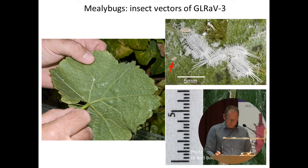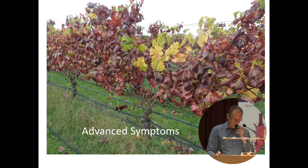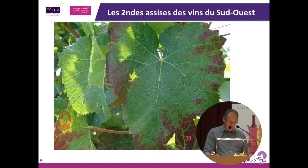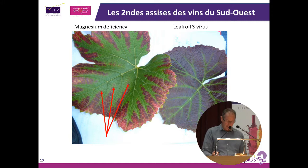Leaf roll symptoms always start at the basal leaves. As the disease or titer level increases, the whole vine becomes infected. Advanced symptoms show the typical downward rolling of the leaf with red areas between the veins while the veins remain green. Some more mild symptoms show blotchy red between the veins at the leaf margins without a lot of leaf rolling. Leaf Roll 3 can be confused with magnesium deficiency, but a trained eye can see the difference. Magnesium deficiency is normally lighter red in colour and does not occupy all the area between the veins, but comes to a characteristic point while the centre of the leaf remains green.